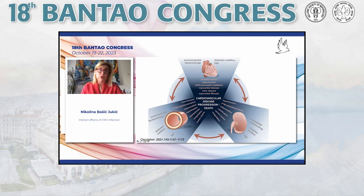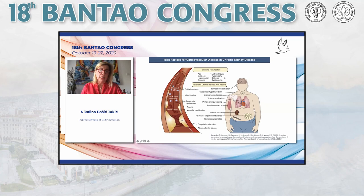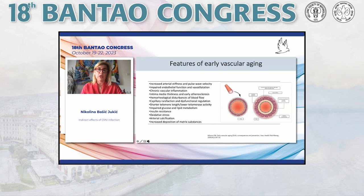Progression of cardiovascular disease and death depends on heart, blood vessels, and kidney function. They are all interrelated and form vicious circles, making it very hard to stop any component. The risk for cardiovascular disease in chronic kidney disease is well-known, and besides traditional risk factors, there are many uremia-related risk factors, most of which can be attributed to vascular changes and vascular aging. So what is early vascular aging?